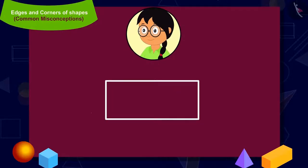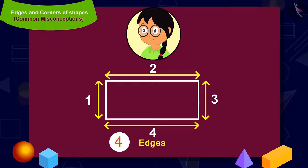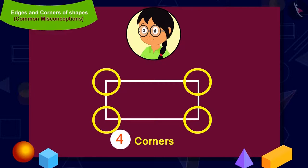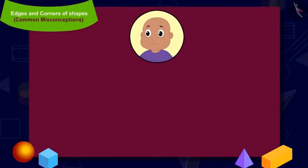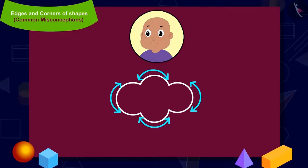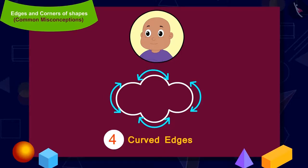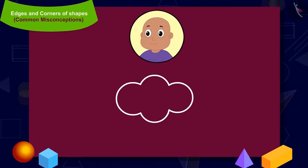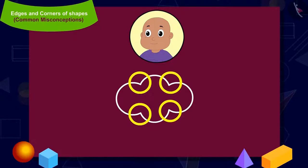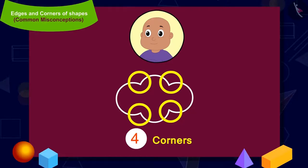Meenu's shape has four edges and four corners — so Meenu's shape is correct. Now let us have a look at Babloo's shape. You can recognize the curved edges of Babloo's shape — there are four curved edges in total. The corners of Babloo's shape are where two curved edges meet — there are four corners in total. So Babloo's shape is correct as well.